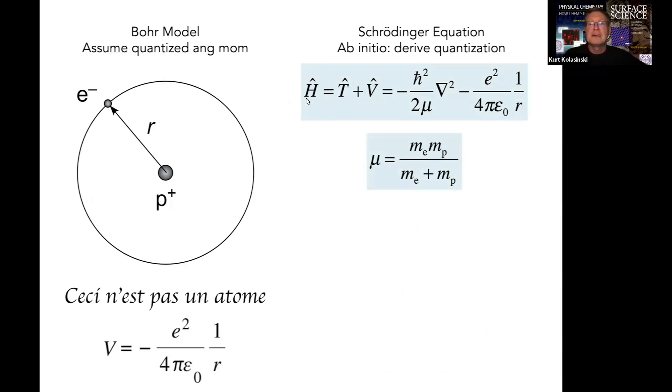We need to define a Hamiltonian operator in terms of a kinetic energy operator and the potential. We know the potential, so we get the potential energy operator directly. Then we have a kinetic energy term, minus h-bar squared over two mu, the reduced mass. We'll use that reduced mass here, which will help us explain it better, with this del-squared operator.